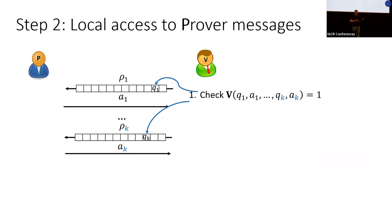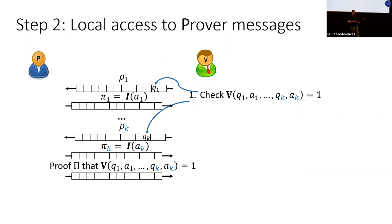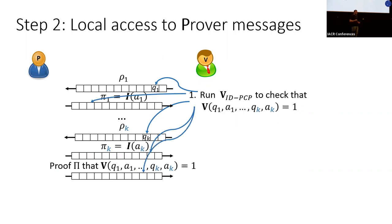We show that any relation on k-tuples decidable in nondeterministic time t has an index-decodable PCP with linear indexer overhead, proof length poly(t), binary alphabet, constant queries to each oracle, and a constant decodability bound. To use this: we encode each prover message with the indexer, then send a proof that had the verifier read the messages under the encodings it would have accepted. If a malicious prover convinces the verifier with high probability, the decodability property gives messages underlying the proofs that actually convince the verifier, which attacks the original proof.